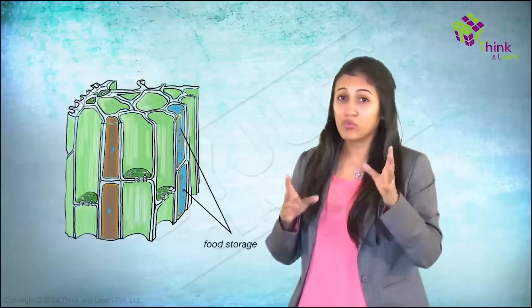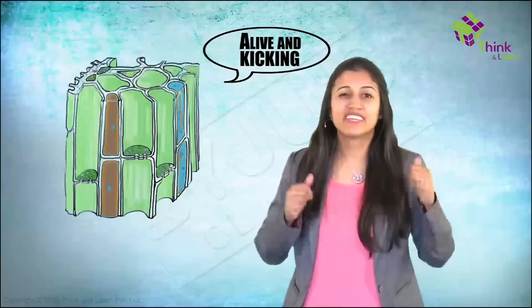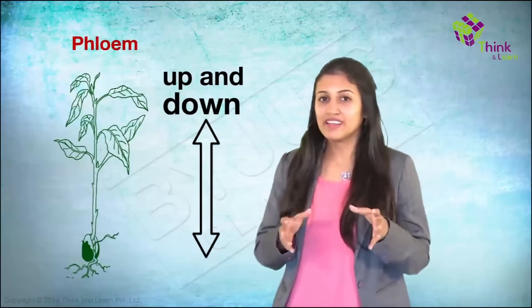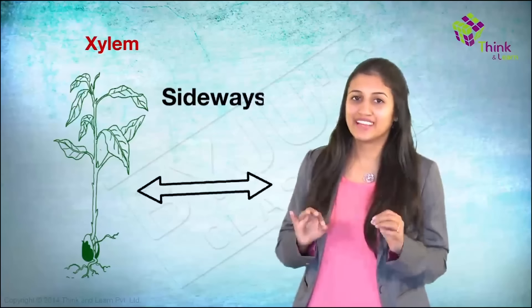Now, you have sieve elements only in angiosperms. And in gymnosperms, you have a more primitive type called sieve cells. Now, primitive or not, they do the job. They are just relatively narrower. The phloem parenchyma, like the xylem parenchyma, are used for food storage. And one major difference between xylem and phloem is that unlike the xylem, all the elements other than the fibers are alive and kicking. And there is one more difference. I am not sure if you realized it. The phloem can transport food up and down through the plant. But the xylem can transport water only upwards and occasionally sideways.